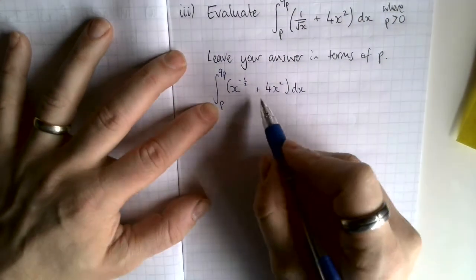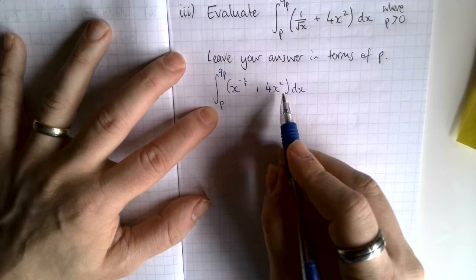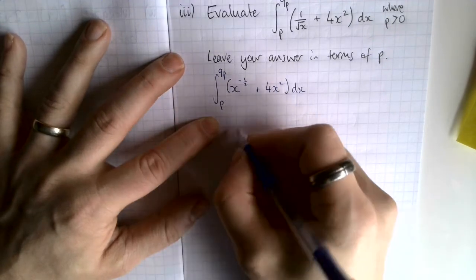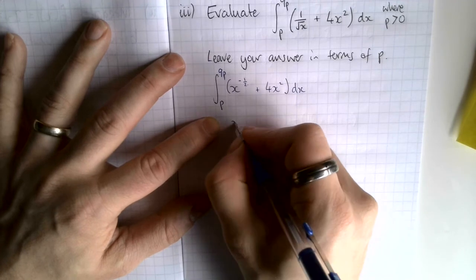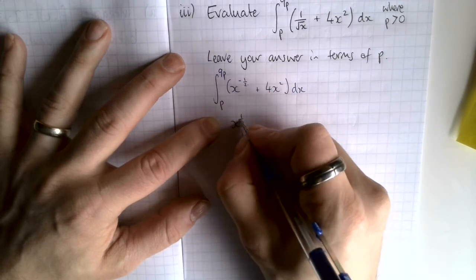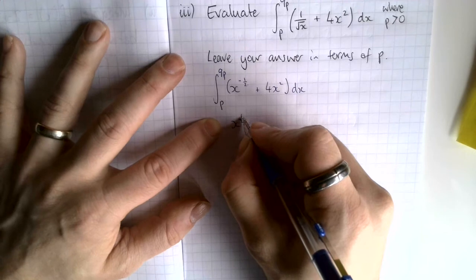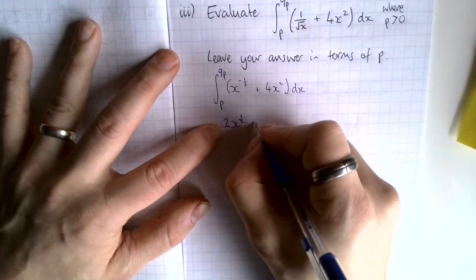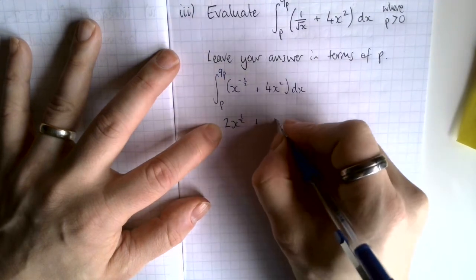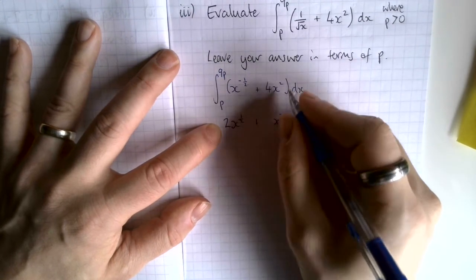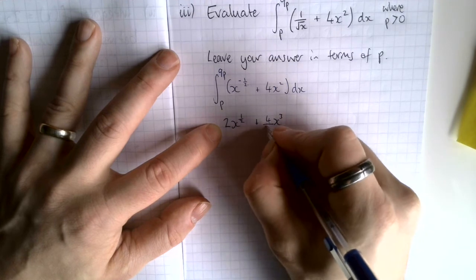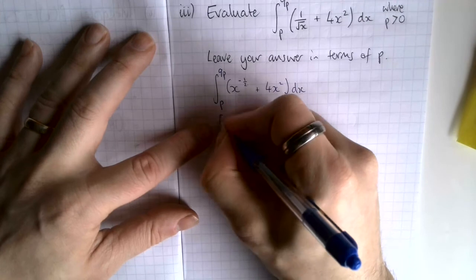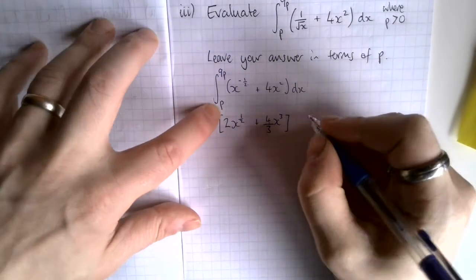Now I'll actually do the integral. Increase the power by 1: negative a half plus 1 is positive a half. Divide through by the new power — dividing by a half is like multiplying by 2, so that gives 2x to the power of a half. Then x squared goes up to x cubed, and 4 divided by the new power of 3 gives 4/3 x cubed. Square brackets with limits p to 9p.